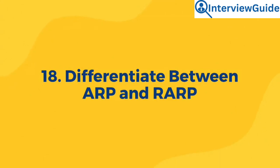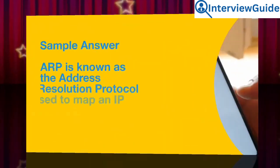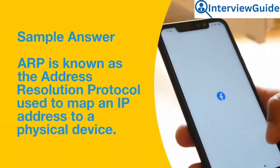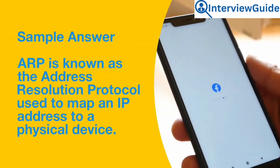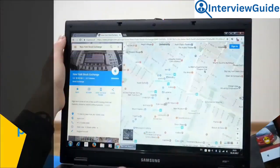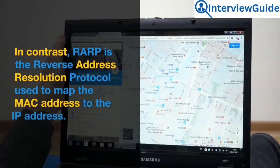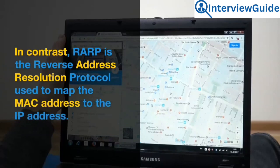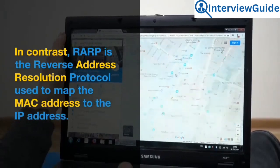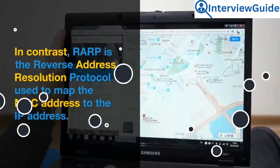Question 18: Differentiate between ARP and RARP. ARP, the Address Resolution Protocol, is used to map an IP address to a physical device. In contrast, RARP, the Reverse Address Resolution Protocol, is used to map the MAC address to the IP address.